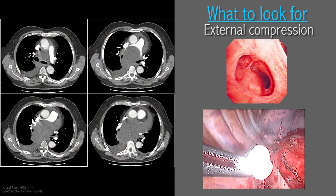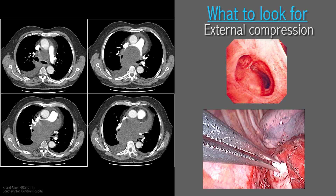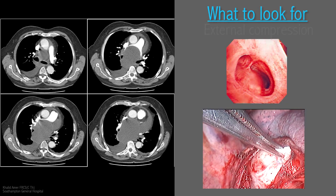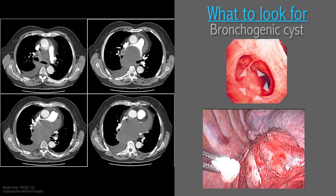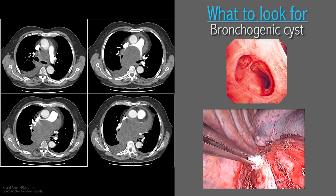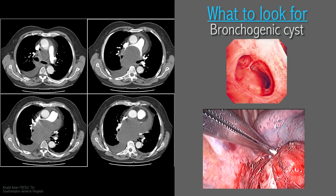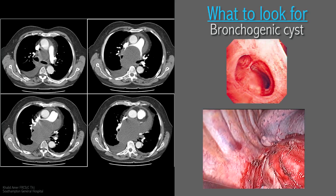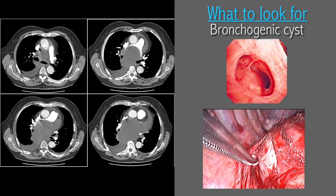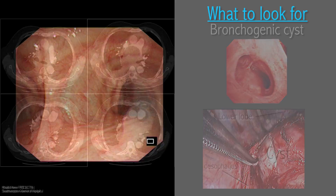Before leaving the area of the carina, here is an example of external compression. The subtle asymmetrical rise in the membranous part at the take-off of the right main bronchus is abnormal. It transpired that it was caused by a bronchogenic cyst expanding the subcarinal space.